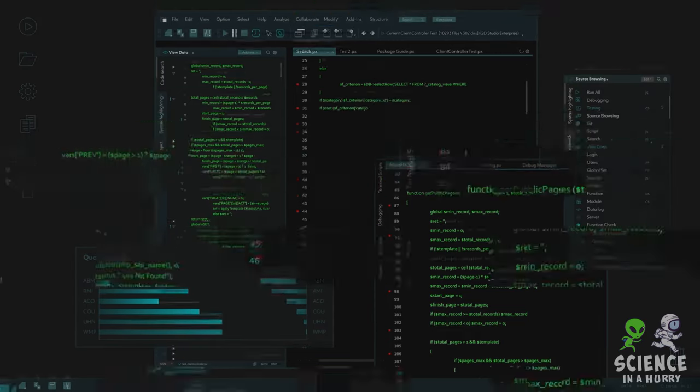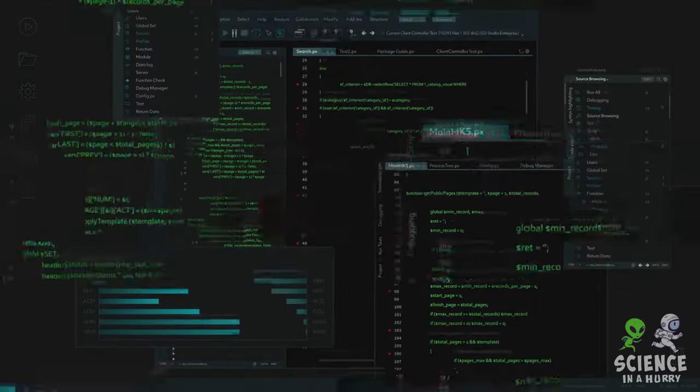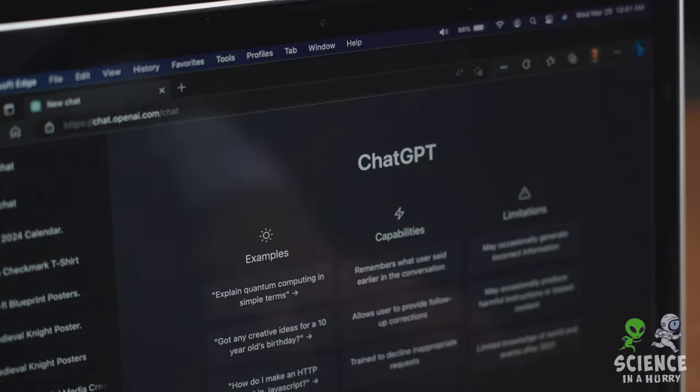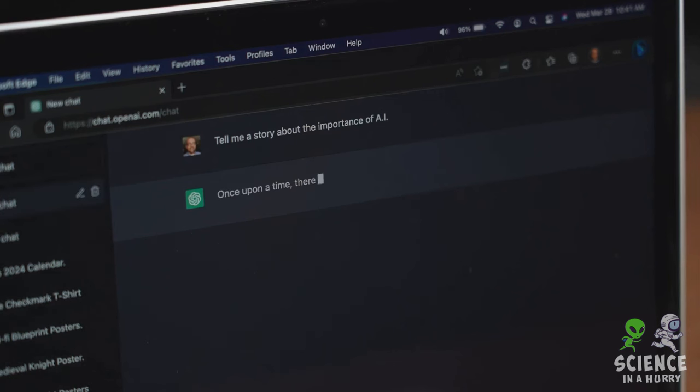It can learn, understand and even solve problems across a wide array of disciplines. Imagine an AI that can write a novel, compose music, create art or even make scientific discoveries. That's the potential of AGI.